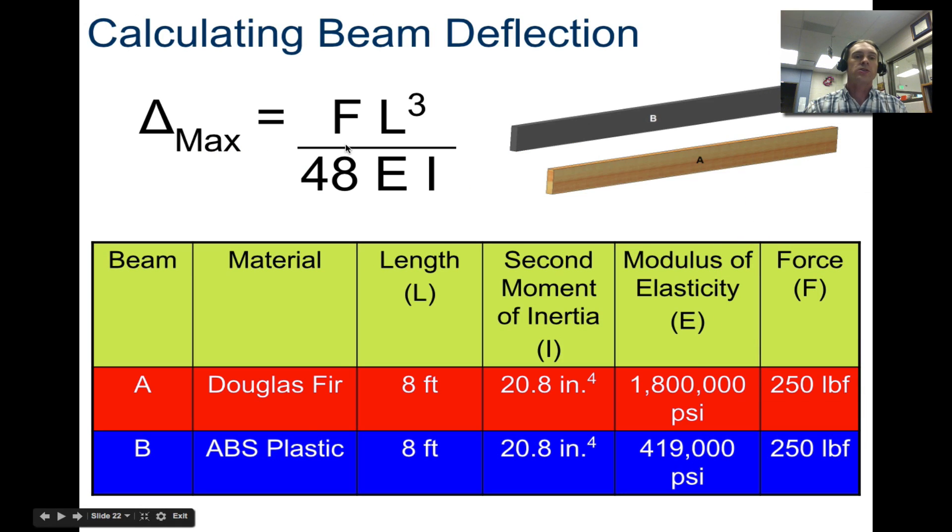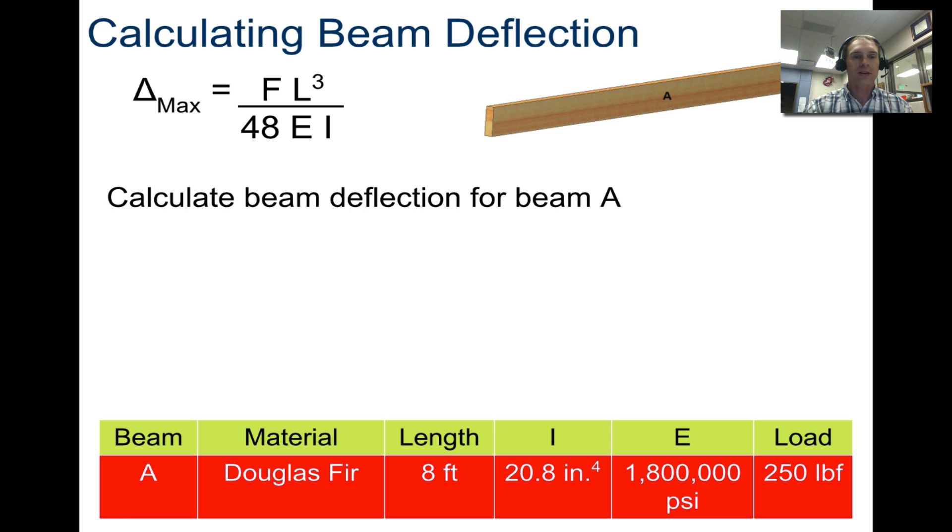Your delta max, your beam deflection, can also be found using this. Where F is the force applied, L is the length, E is the modulus of elasticity, and I is the second moment of inertia. After we calculate the second moment of inertia, same for both of these, same shape, same length, same force applied, but now we have a different modulus. You would find that in an engineering chart book of something that's already given for ABS and already given for Douglas Fir. Notice it's way higher for Douglas Fir. So it does not want to deflect or bend at all. But after a certain point, it will snap, whereas this might actually bend back, might actually return back to its shape. Let's calculate this.